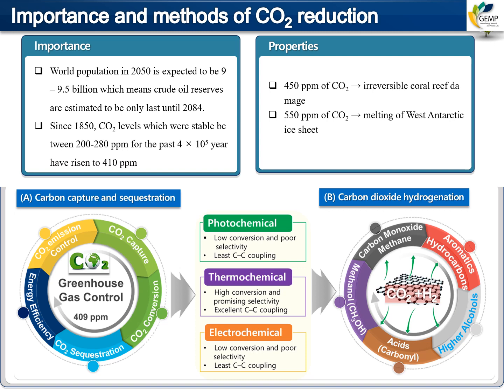Two major strategies can be used: one is carbon capture and sequestration, and the other is carbon dioxide hydrogenation. Through carbon capture and sequestration we can control CO2 emissions by capturing CO2 by different means, and after capturing, it can be reduced to different products — different hydrocarbons — via three different processes: photochemical CO2 reduction, thermochemical CO2 reduction, and electrochemical CO2 reduction.